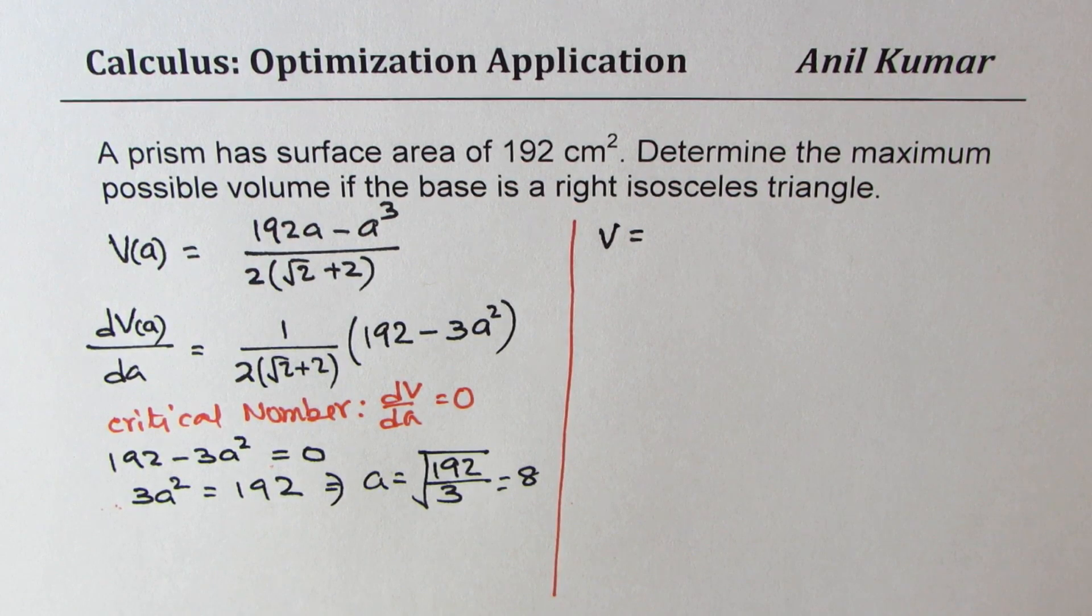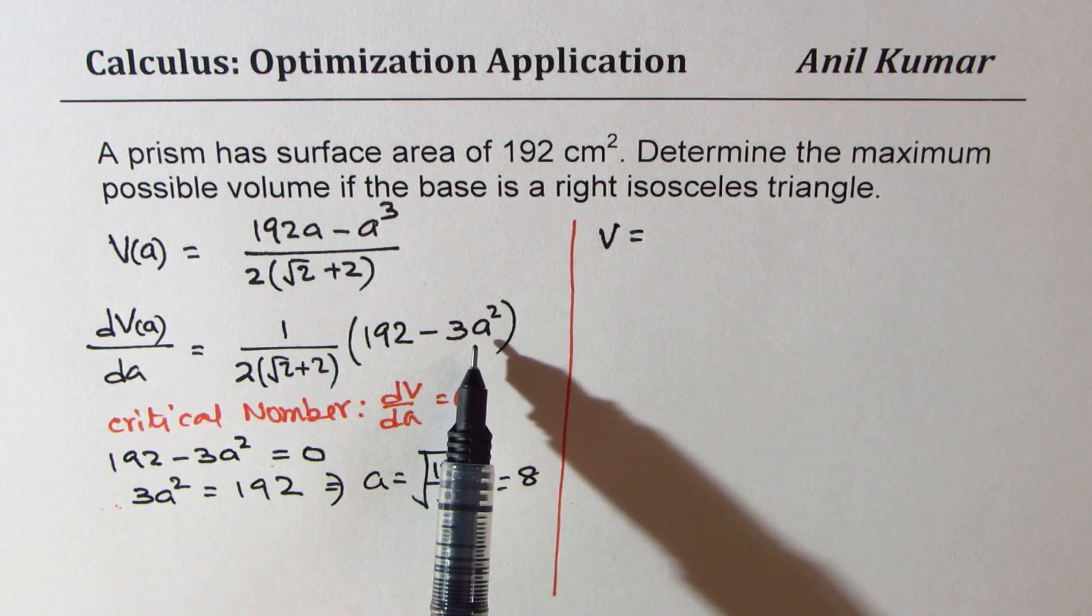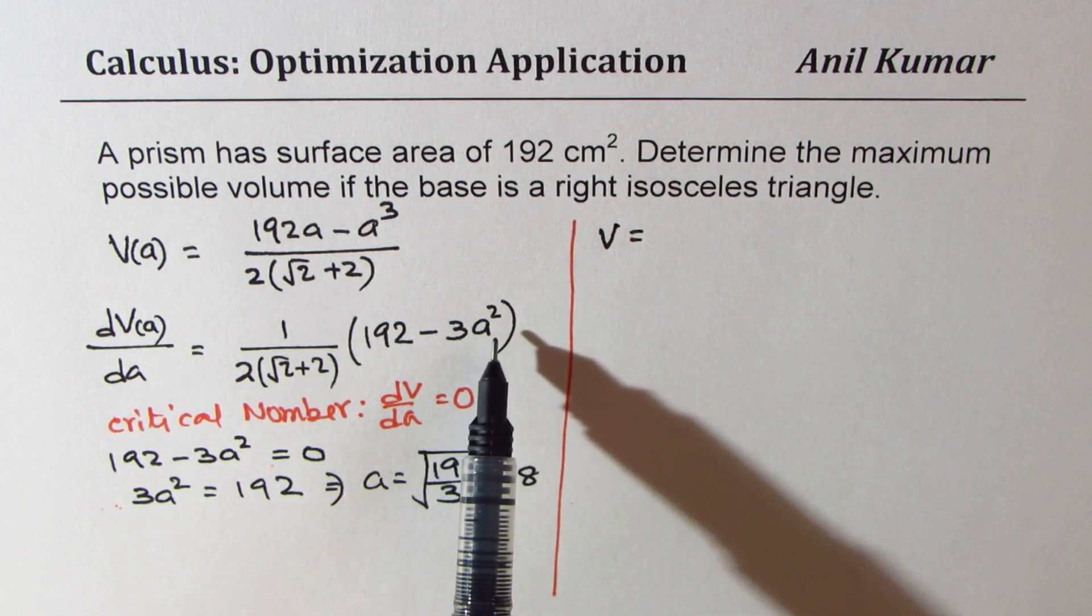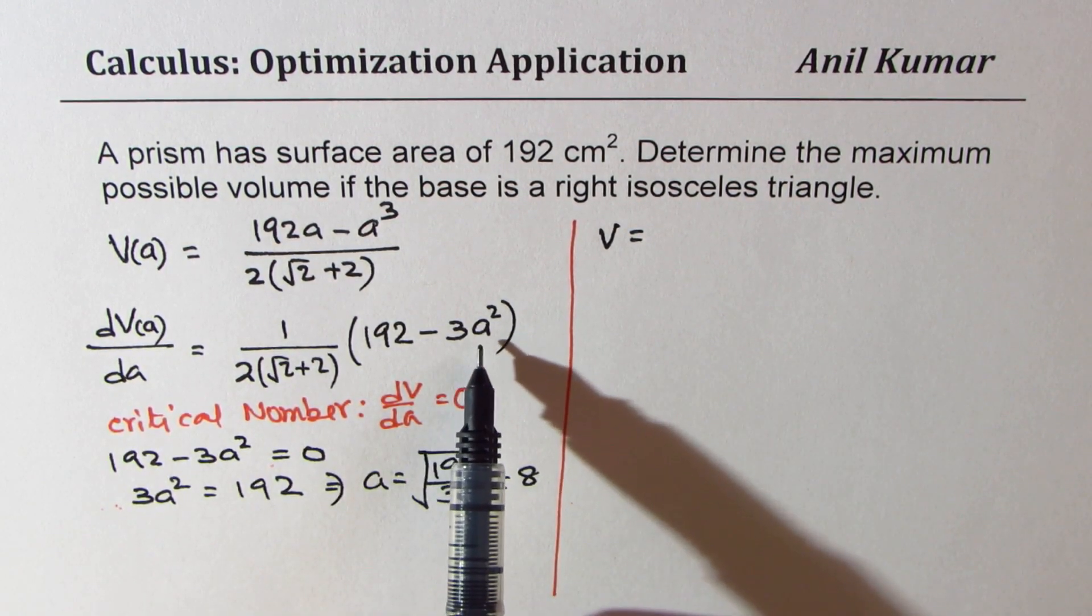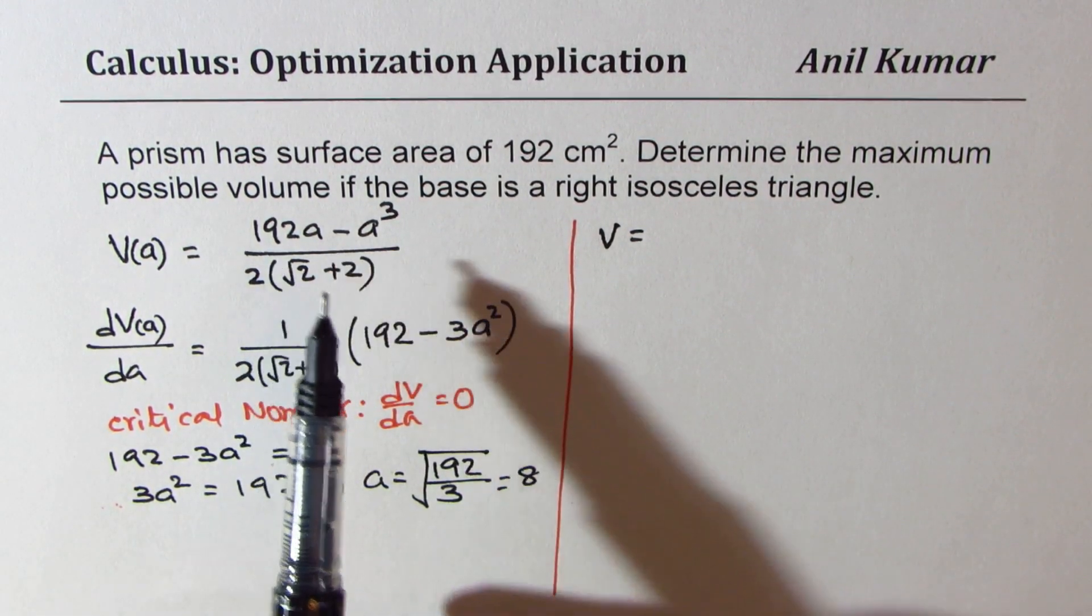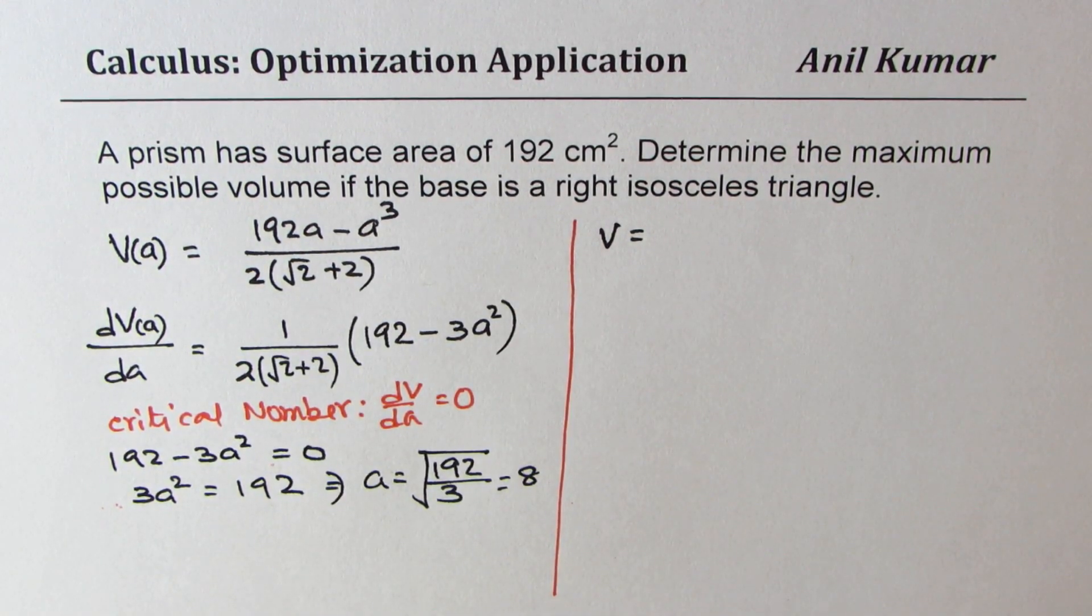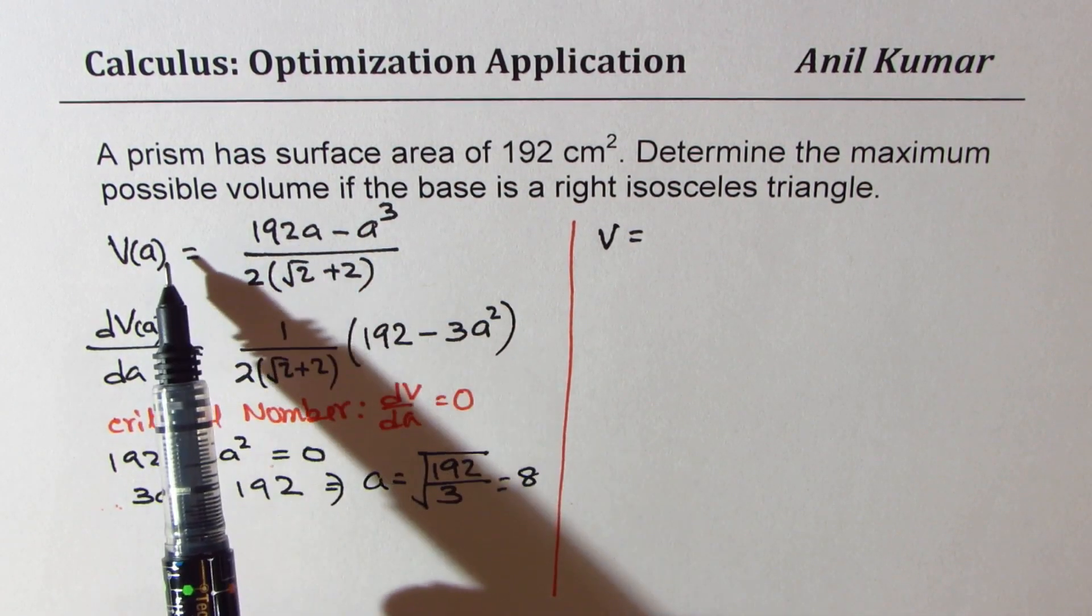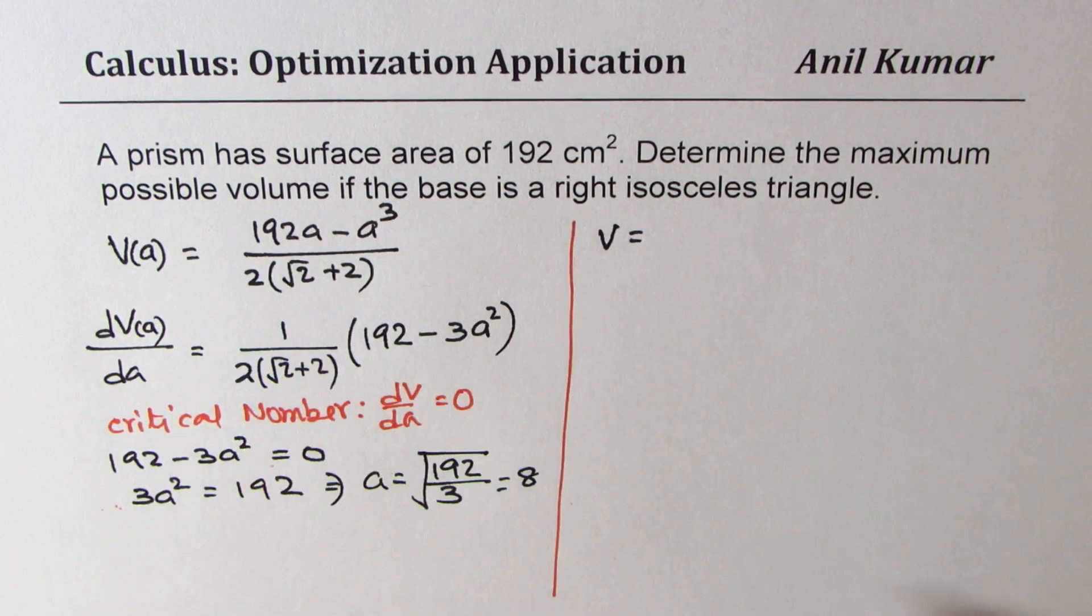Now in this example, it is very important to also understand whether this critical number is a maximum or not. That is kind of important to understand. So we could actually find the limits of a using this particular volume expression which is 192a minus a cube. So from here, we can actually get limits of a what could be the dimensions of a since volume has to be positive. So let's look into that part also.